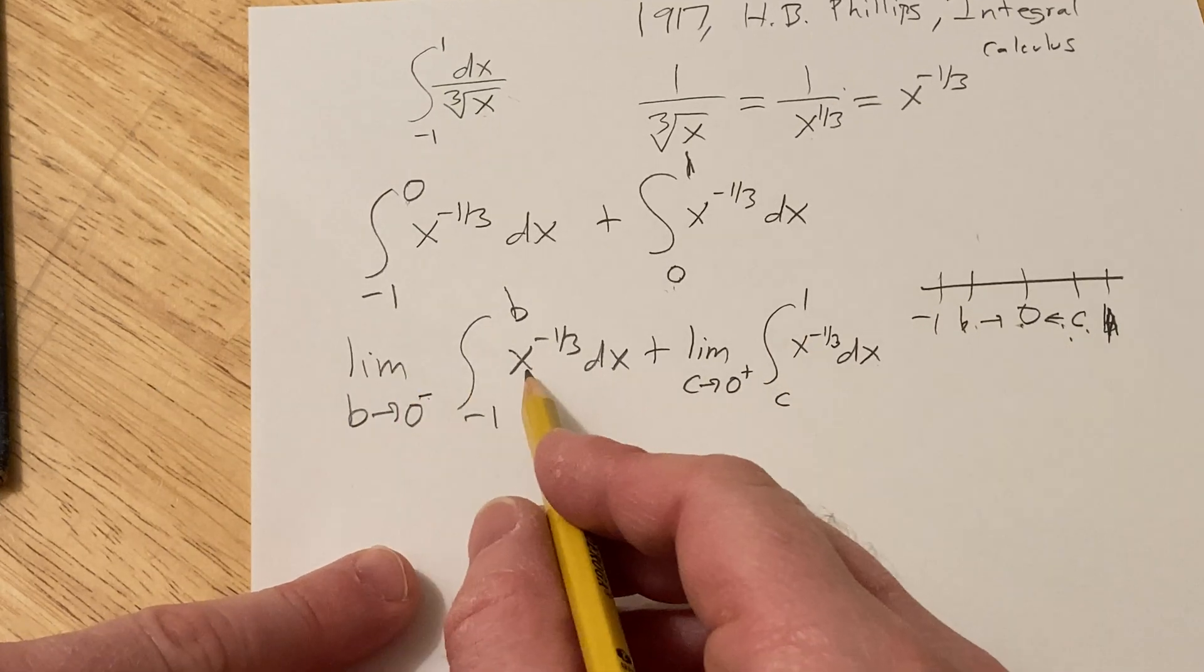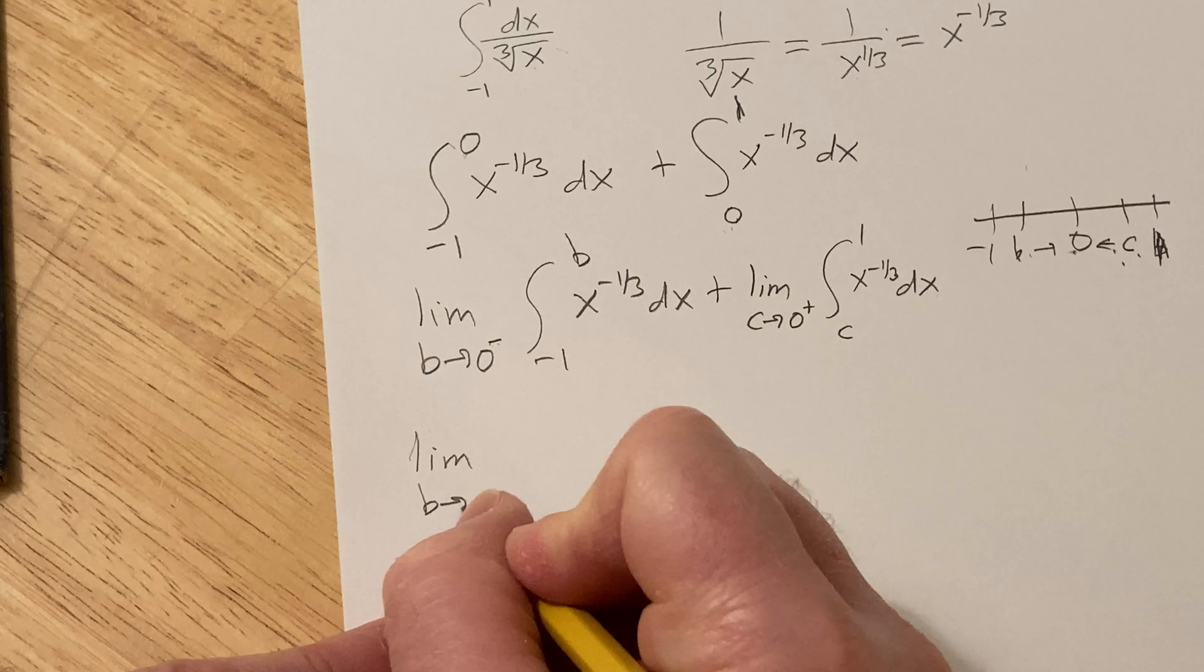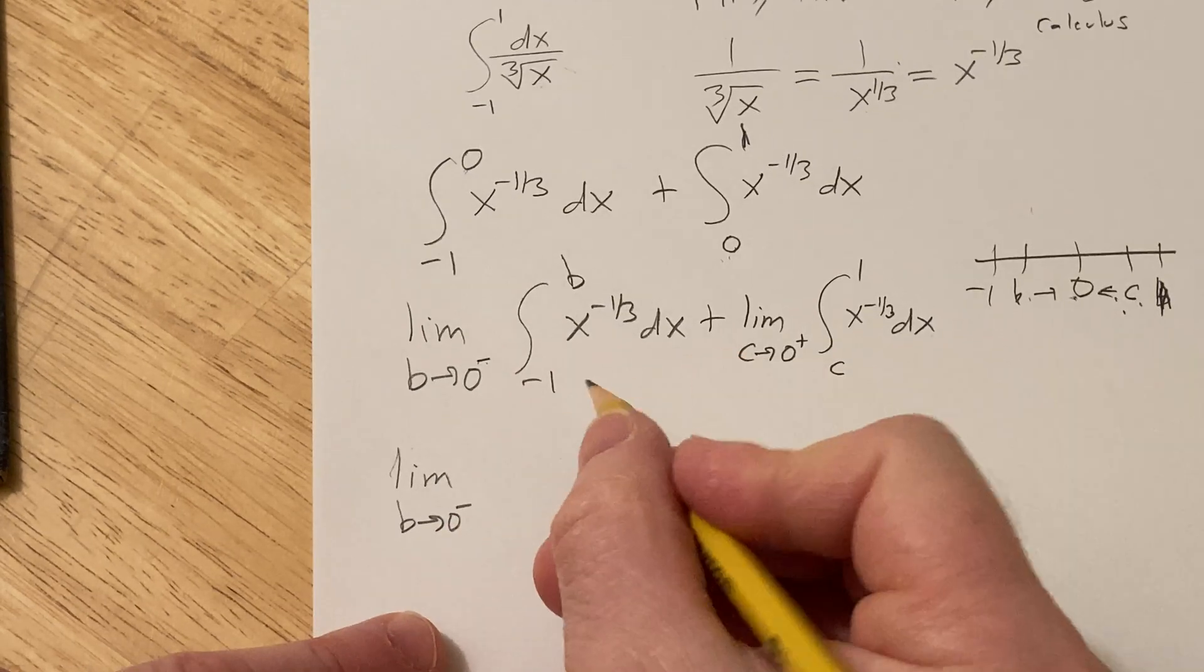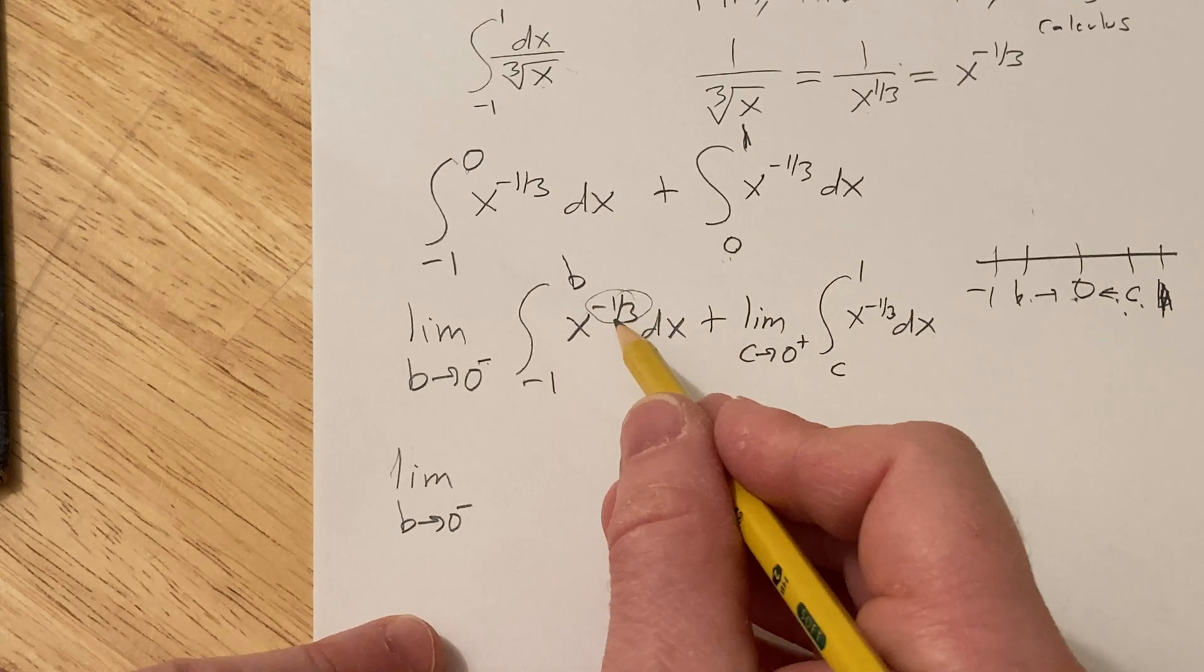Now we go ahead and integrate. This is the limit as b approaches zero from the left. Here you add 1 and divide by the result, that's the power rule for integration.